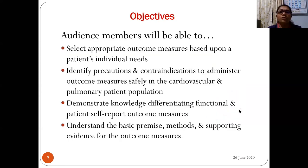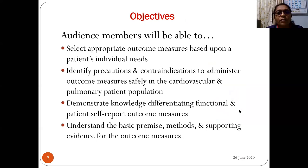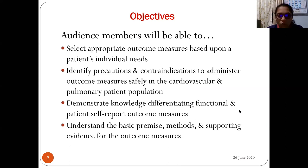The objectives for today's session: at the end of this session, you will be able to select appropriate outcome measures based upon a patient's individual needs, identify precautions and contraindications to administer outcome measures safely in cardiovascular and pulmonary populations, demonstrate knowledge differentiating functional and patient self-reported outcome measures, and understand the basic premise, method, and supporting evidence for outcome measures.